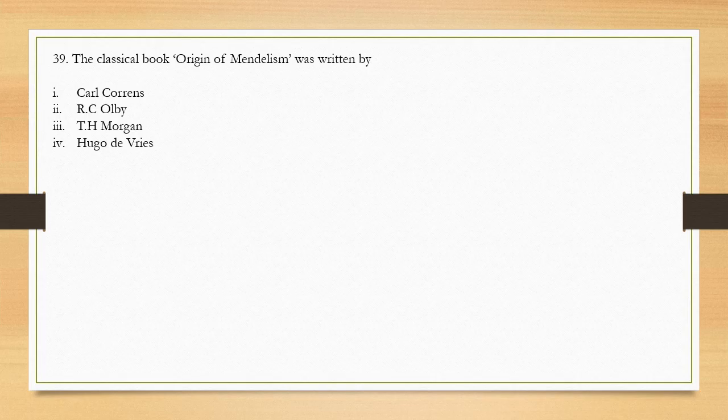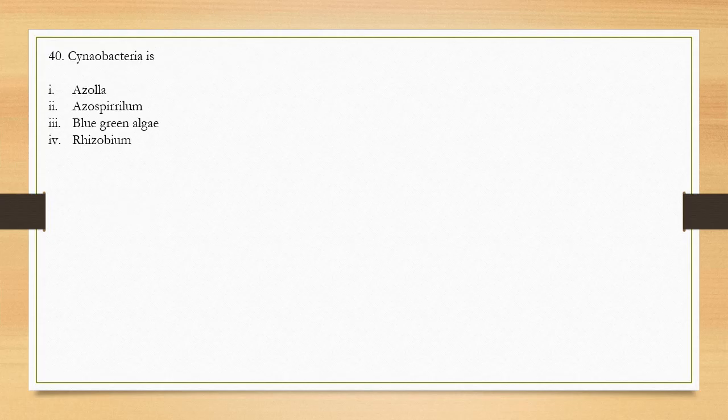Question number 39: The classical book 'Origin of Mendelism' was written by — options are Karl Correns, RC Olby, TH Morgan, and Hugo de Vries. The correct answer is option 2, RC Olby. Question number 40 concerns cyanobacteria — options include Azolla, blue-green algae, and Rhizobium.